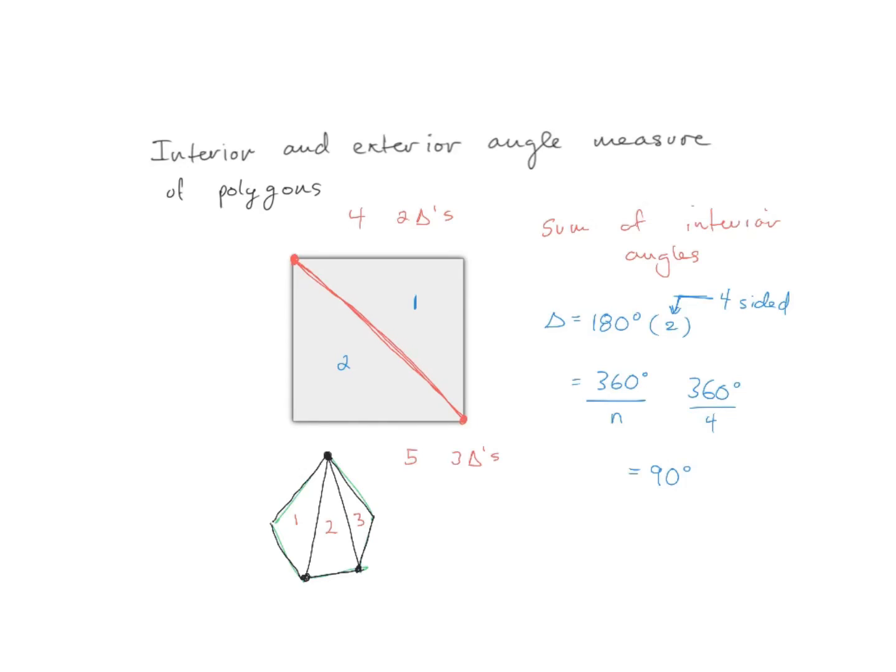Notice a pattern: there's usually two less triangles than there are number of sides. And being that each triangle is 180 degrees, we could just simply multiply by 180 degrees. So if I had an octagon and I know that has eight sides, I would just do eight minus two times 180 and get my sum of angles.